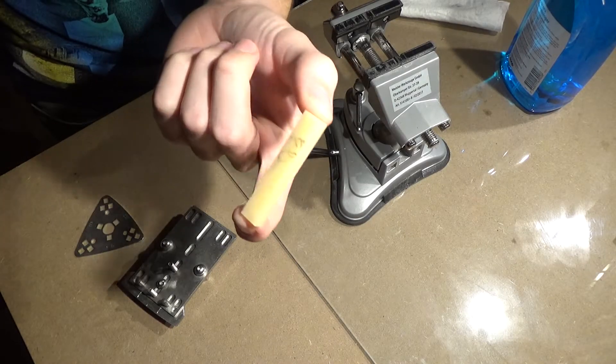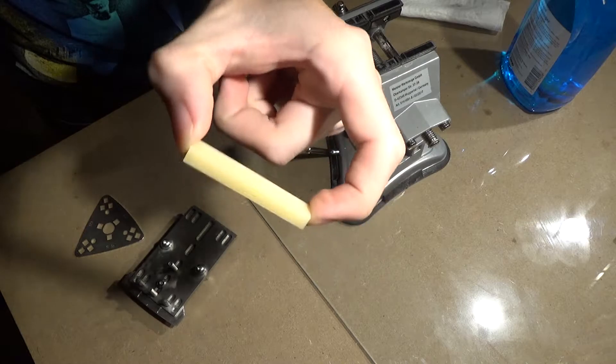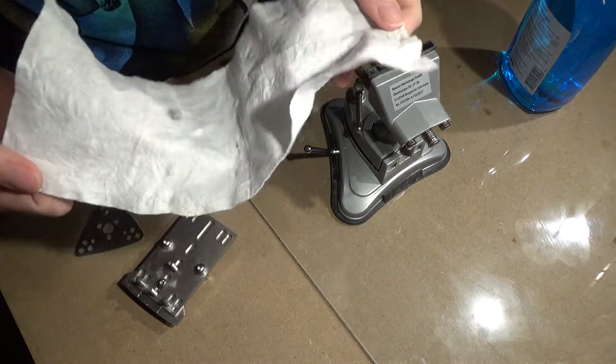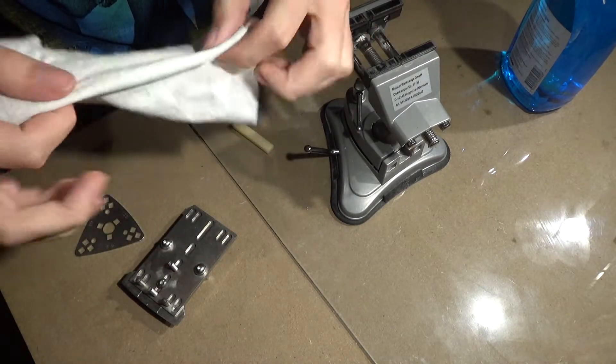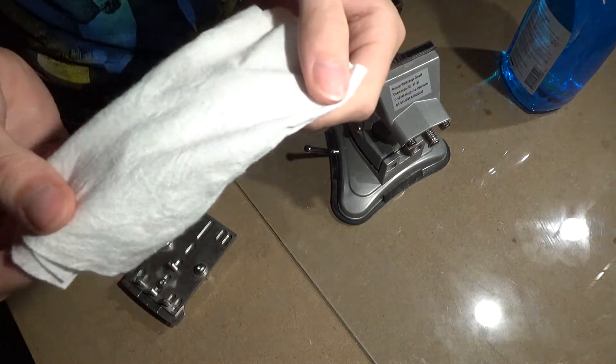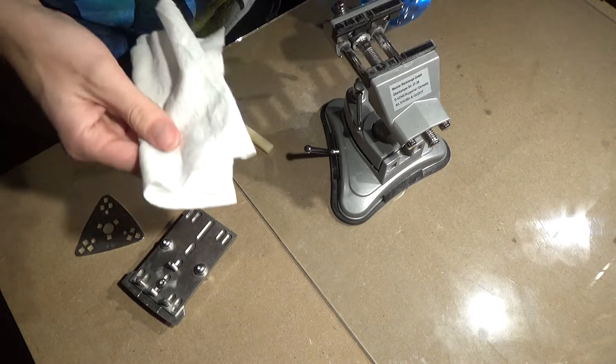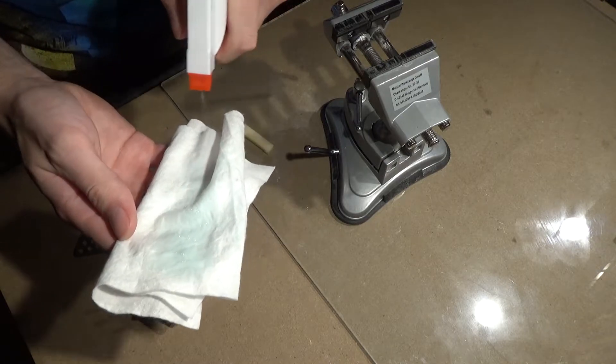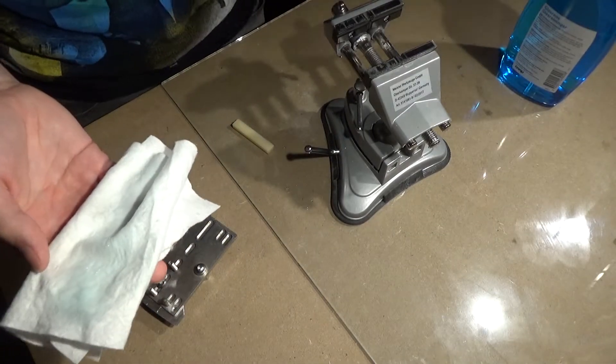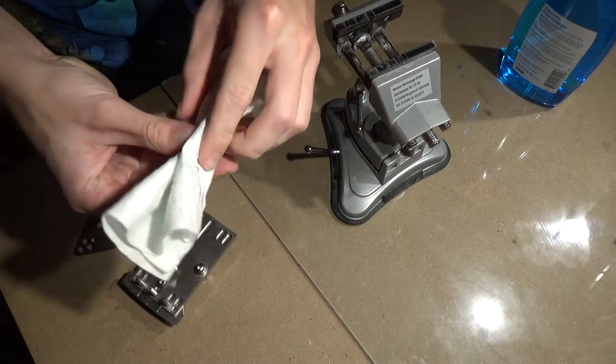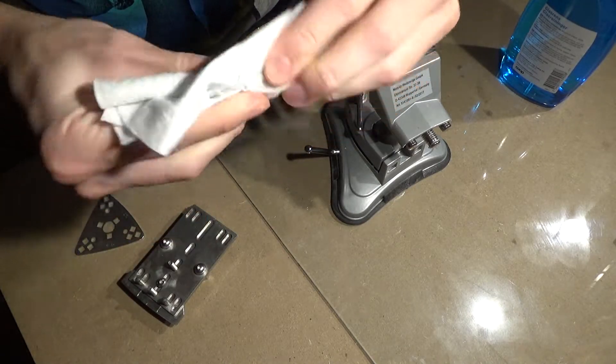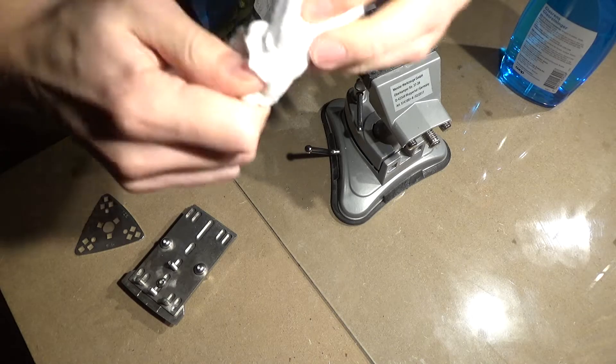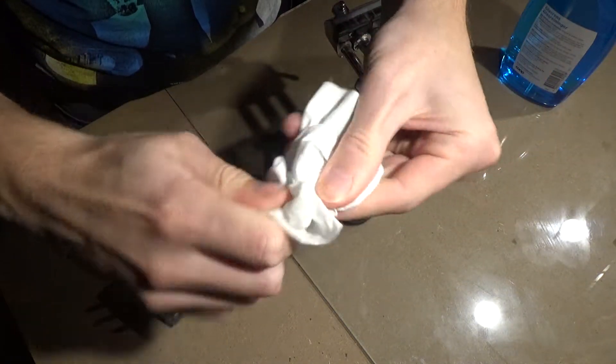Okay guys, so right now before we get this in the jig, we're just going to degrease the bone and I just like to use some form of cloth here and just some standard window cleaner. Basically just spraying it and then just lay it in there and just start rubbing it all in to degrease the bone here.